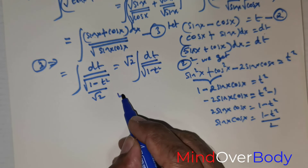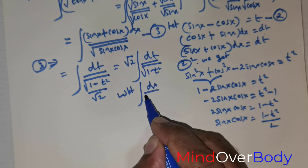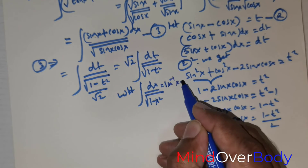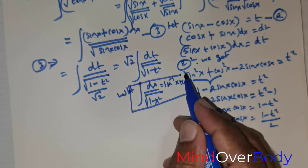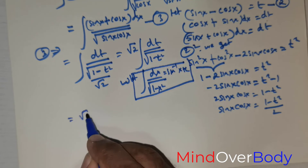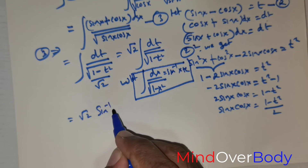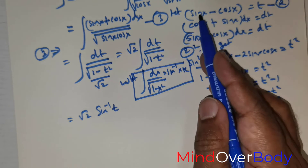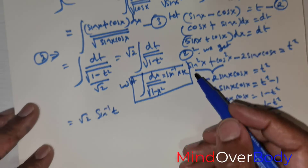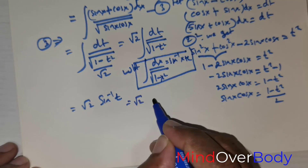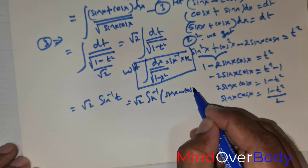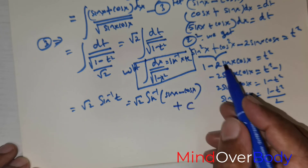We know the standard formula: the integral of dx over √(1 − x²) equals sin⁻¹(x) + C. Applying this formula, the result is √2 · sin⁻¹(t) + C. Since t = sin x − cos x, substituting back gives the final answer: √2 · sin⁻¹(sin x − cos x) + C.